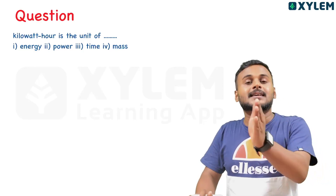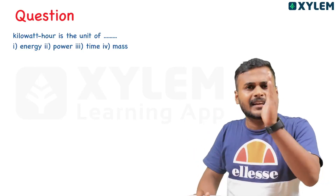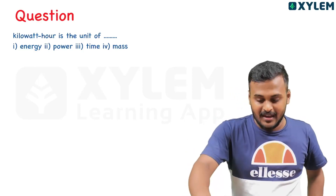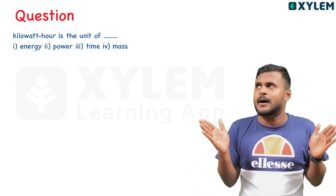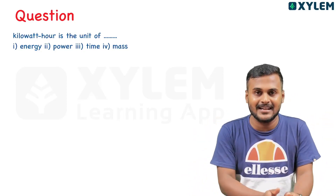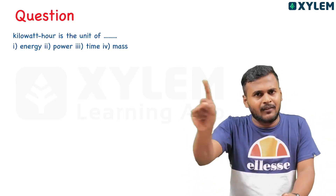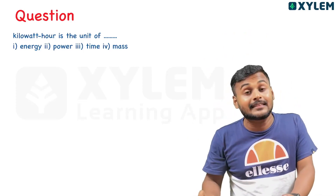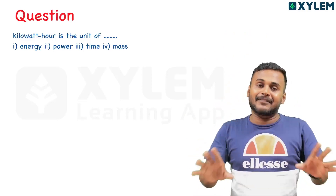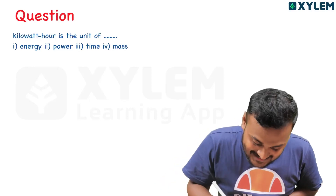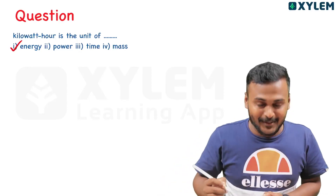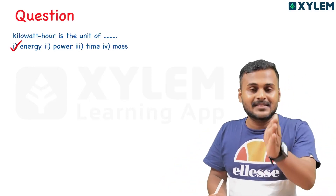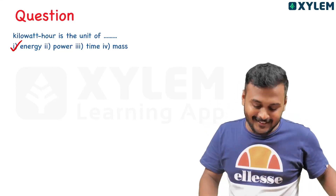The next question: the kilowatt hour is the unit of dash. What unit is it? It is related to power. Kilowatt hour — whenever you see a power unit, this unit is an energy unit. Kilowatt hour is the unit of energy. That's right.